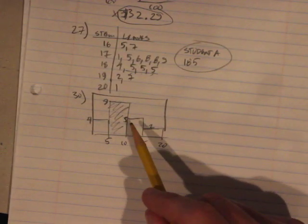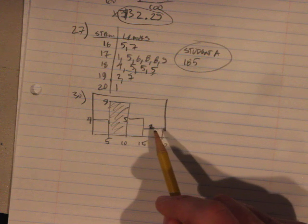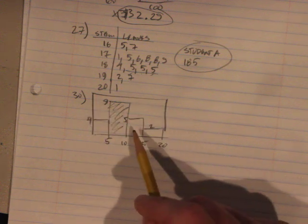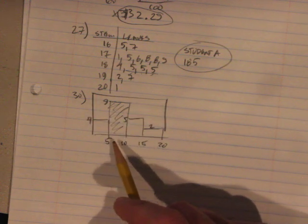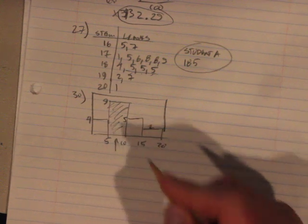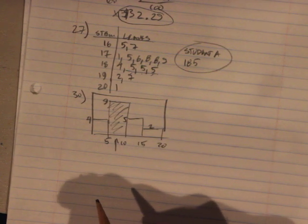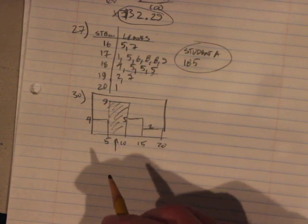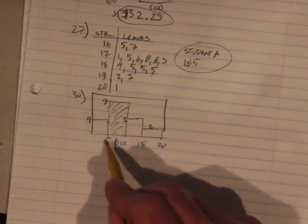So close to getting this whole assignment on one video. All right, so here's our histogram and we're trying to find out what percent, or what is the probability, that a student randomly selected from homeroom works 5 to 10 hours per week.